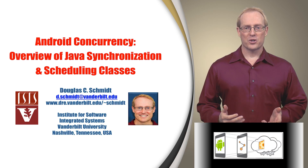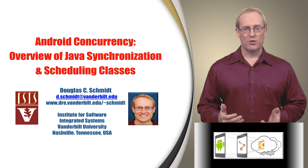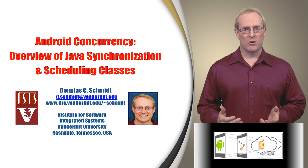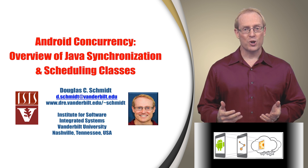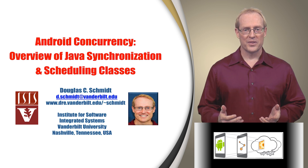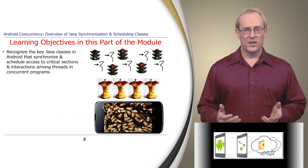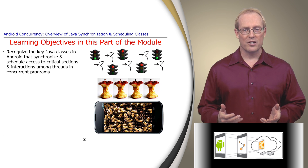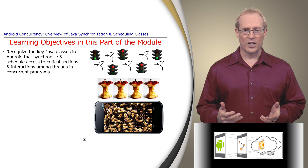Welcome to the next part of the module, which presents an overview of key Java synchronization and scheduling classes. The concurrent Java program examples presented in the previous part produced incorrect results since they lacked proper synchronization and scheduling. Therefore, this part summarizes the key Java classes provided by Android to synchronize access to critical sections and schedule interactions among threads in concurrent programs.